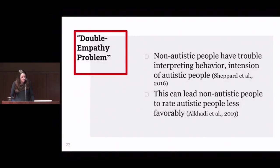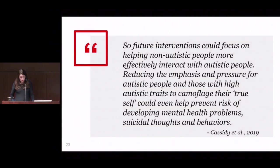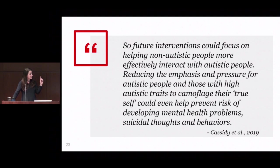Other research has shown what they call a 'double empathy problem,' where people who are not autistic have trouble interpreting the behavior and intentions of autistic people, leading non-autistic people to rate autistic people less favorably. Future interventions could focus on helping non-autistic people more effectively interact with autistic people. Reducing the emphasis and pressure for autistic people and those with high autistic traits to camouflage their true self could help prevent the risk of developing mental health problems, suicidal thoughts, and behaviors.